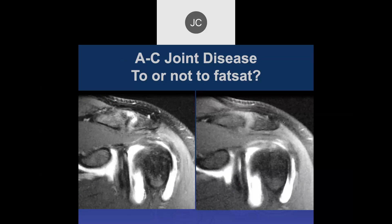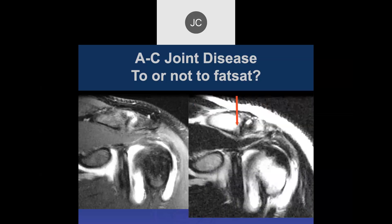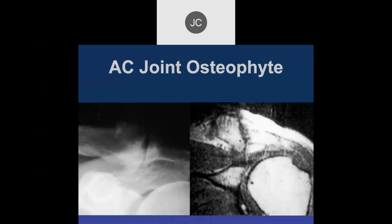AC joint imaging: an arthrogram with PD fat-sat and T1 fat-sat images. On non-fat-suppressed T2 you can actually see the soft tissue anatomy better because fat is a good contrast agent in the musculoskeletal system. The non-fat-suppressed images are quite helpful.